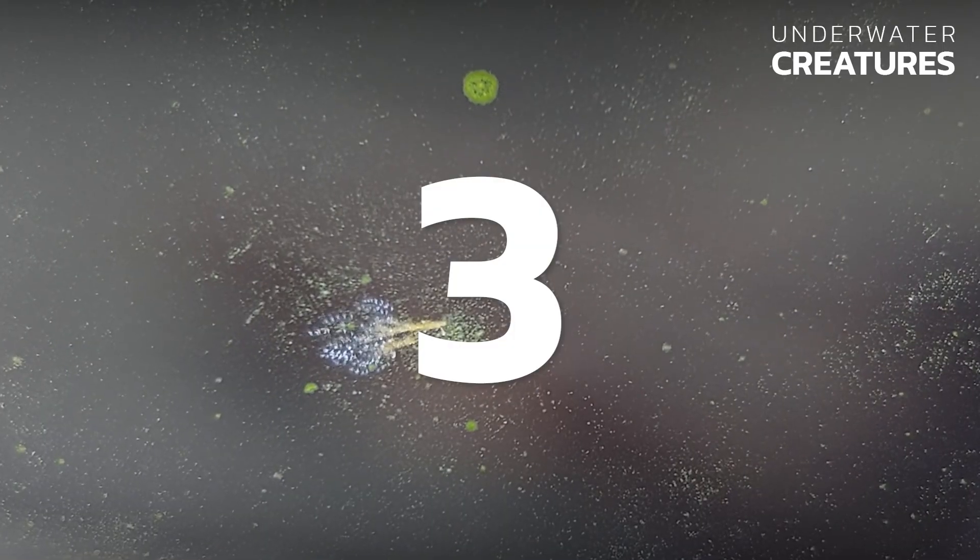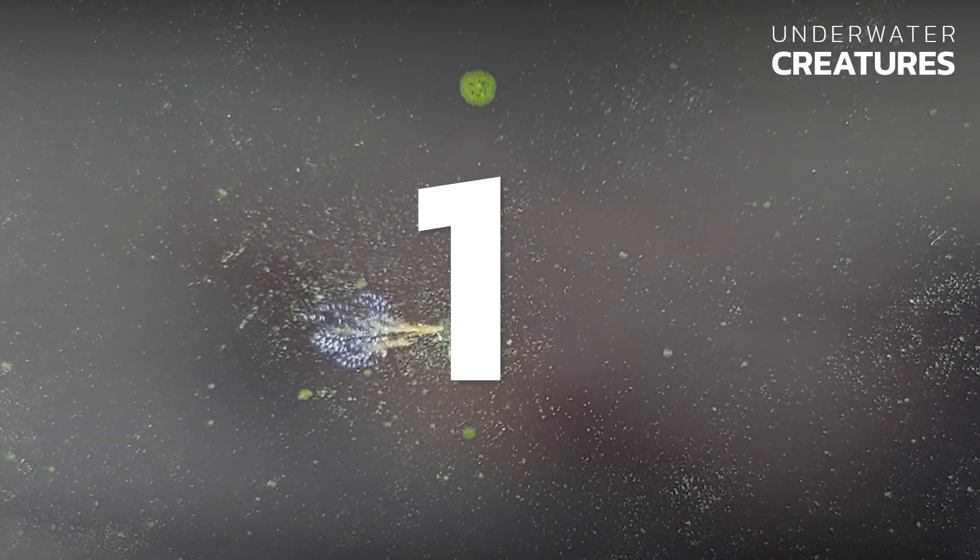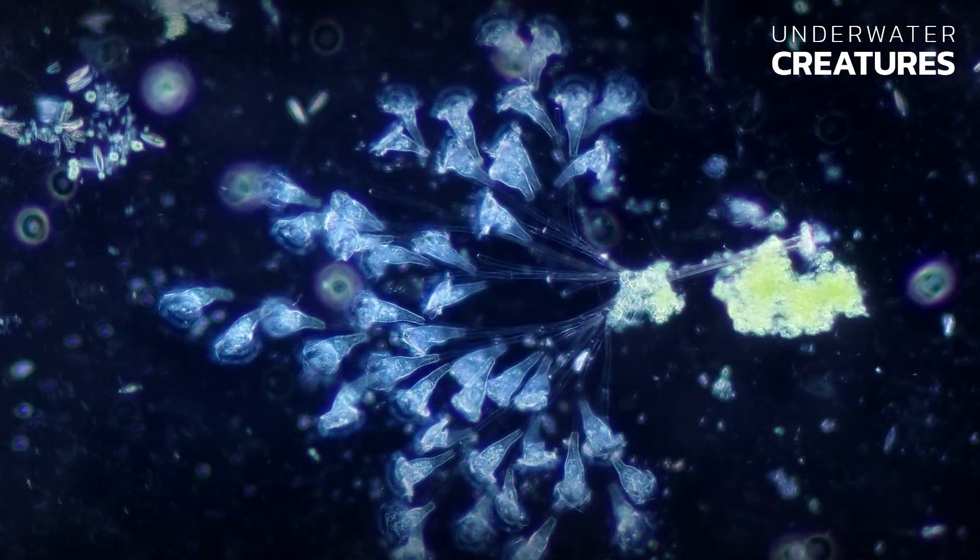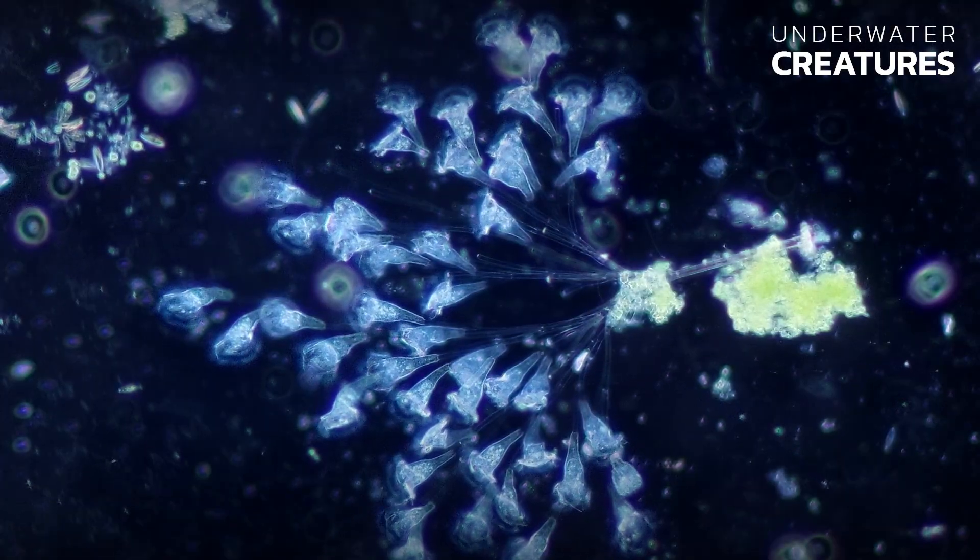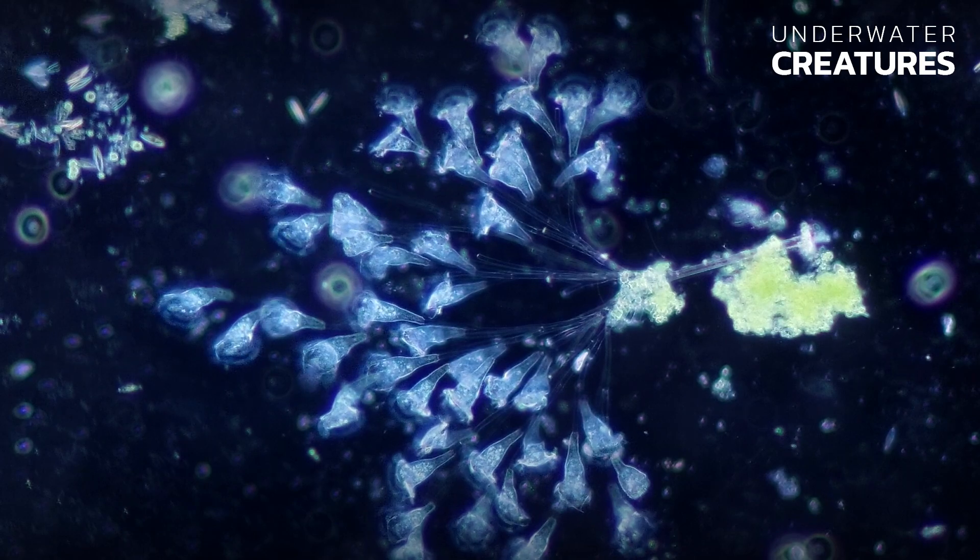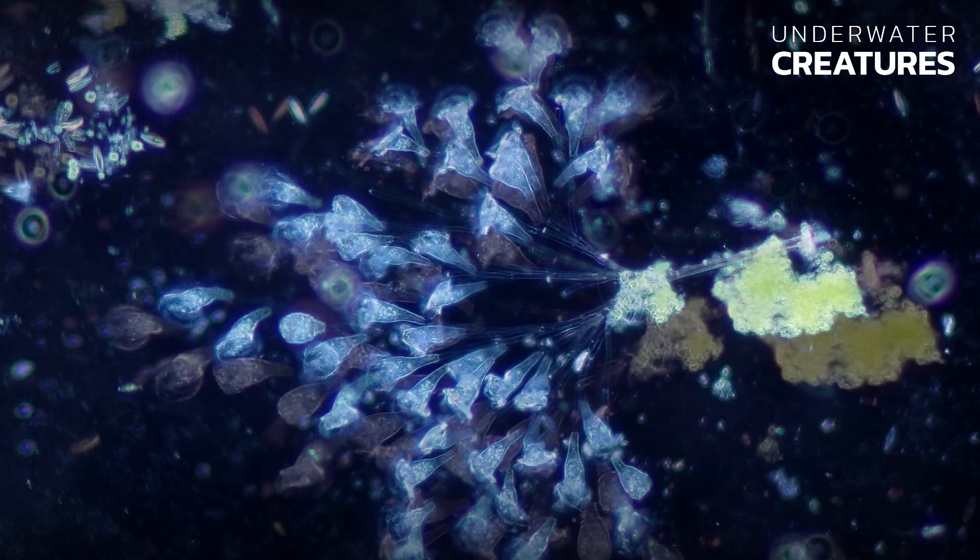Get ready to be stunned in three, two, one. Isn't it beautiful? Carchesium sp. are ciliated infusoria of the family Vorticellidae belonging to the order of Cecilidae, which proliferate and form colonies resembling bouquets of flowers.